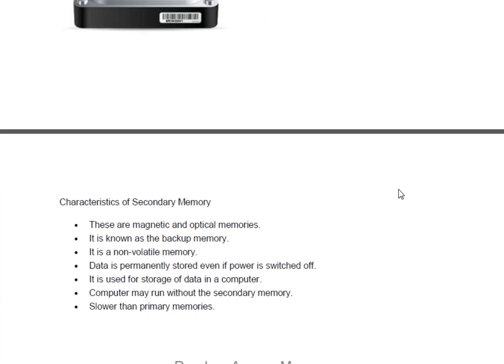Let's go through the characteristics of secondary memory. First, these are magnetic and optical memories. Magnetic means magnetized memory — like magnetic tapes and floppy disks. Optical means memory accessed by a laser beam — like CDs. It is also known as backup memory because data is stored in these devices for a longer time. It is non-volatile memory — when electricity is cut off, there is no effect on data stored in secondary memory.